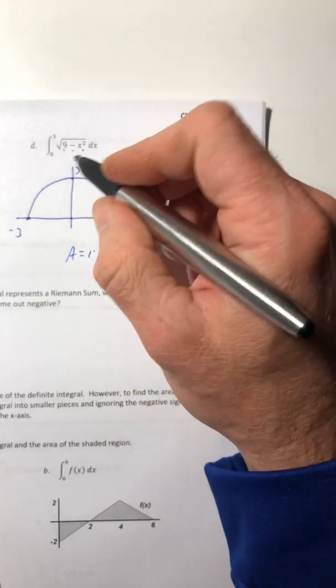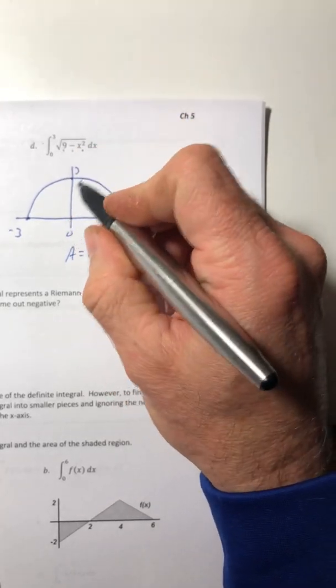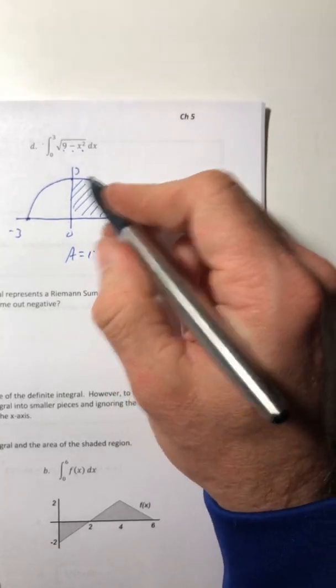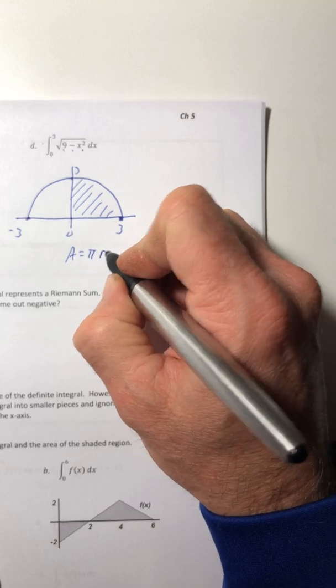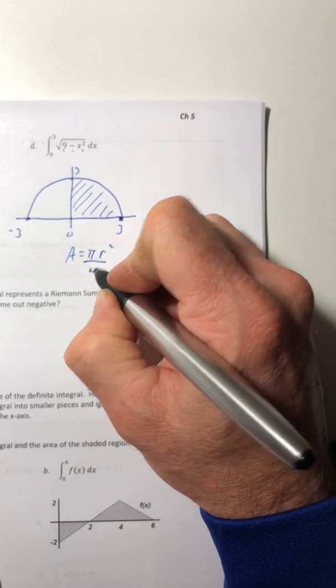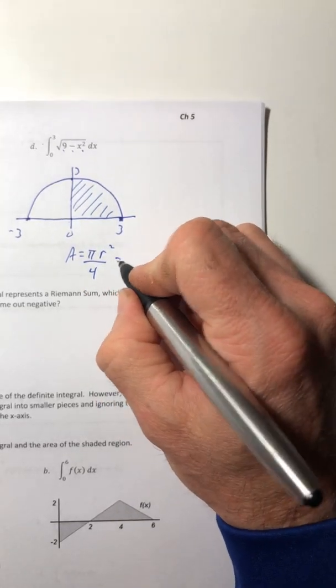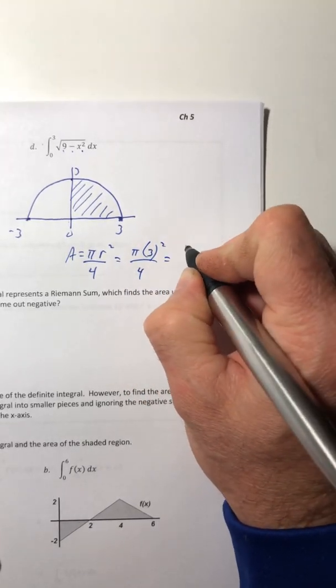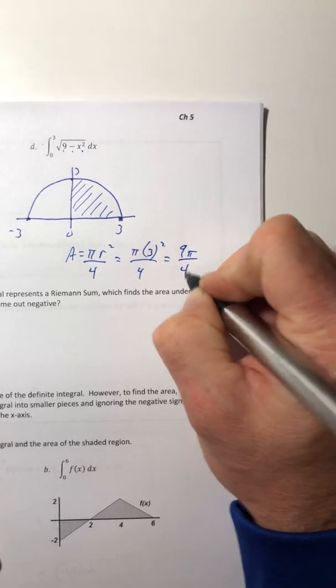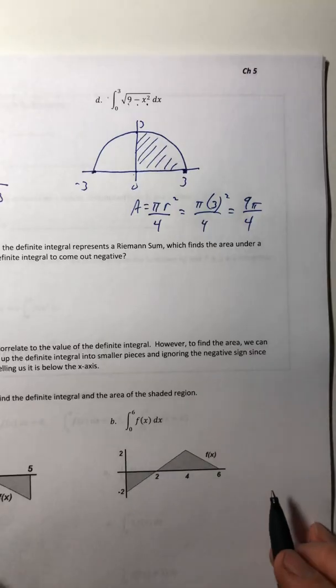So the area, we only want it from zero to three. So that's a quarter of a circle. So pi r squared, but it's only a fourth. So it's just divided by four. So nine pi over four. Ta-da!